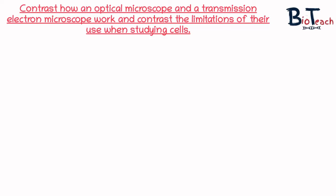I wanted to ensure that you had an opportunity to look at some past paper questions to see how you would word some of the answers. This question says: contrast how an optical microscope and a transmission electron microscope work, and contrast the limitations of their use when studying cells. This question is worth five to six marks and you essentially have to talk about the differences between the two and their limitations. Pause the video now and have a go at writing down your thoughts, then press play when you're ready to check your answers.